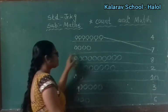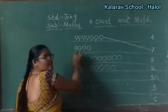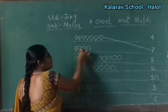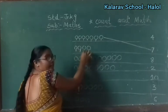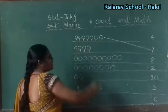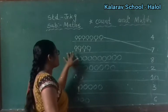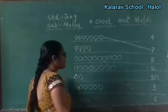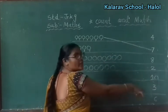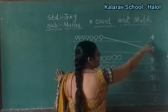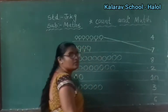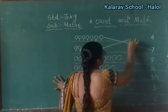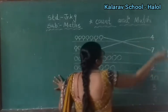Now second. How many circles here? Let's count: 1, 2, 3, 4. How many circles? Yes, there are 4. So find out the number 4, children. Where is the number 4? Look here — yes, this one is 4. So match it. Draw a line. Join.